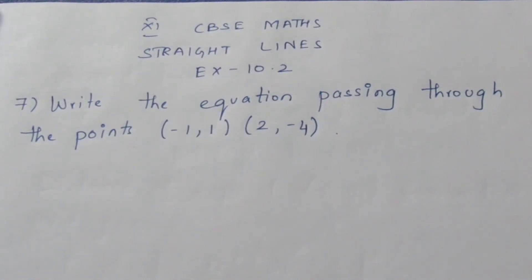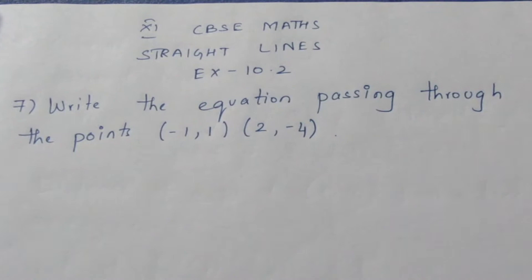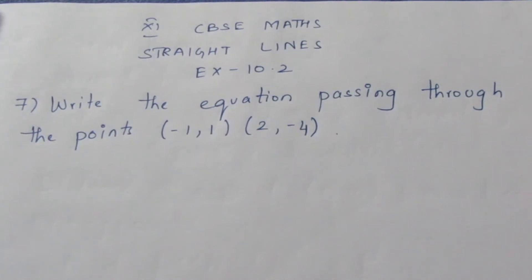Write the equation passing through the points (-1, 1) and (2, -4). Here they are given two points and they are asking us to find the equation of a straight line.